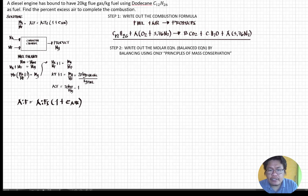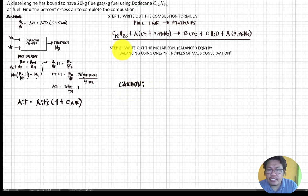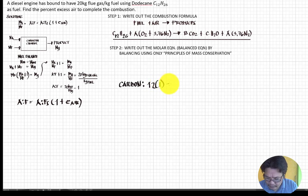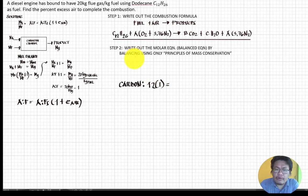Step two: balance the equation using conservation of mass. Starting with carbon: we have 12 carbons on the fuel side, so assuming one mole of fuel, that gives b = 12 on the product side.